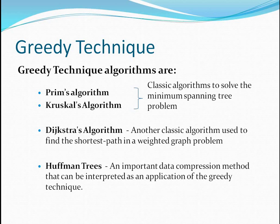There are several greedy algorithms. Among those, we are going to deal with Prim's algorithm, Kruskal's algorithm, Dijkstra's algorithm, and Huffman Trees. The first two algorithms, Prim's and Kruskal's, are classic algorithms used to solve the minimum spanning tree problem. Dijkstra's algorithm is another greedy technique used to find the shortest path in a weighted graph. Huffman Trees is an important data compression method which can be interpreted as an application of greedy technique.